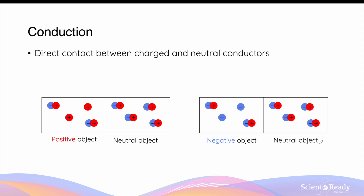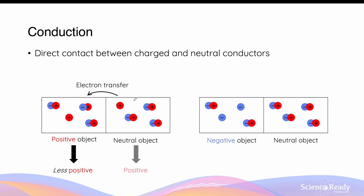The second way objects become charged is through conduction — when a charged object makes contact with a neutral object. When a positive object contacts a neutral object, the excess positive charge exerts an attractive force on the mobile electrons in the neutral object, causing electrons to transfer from the neutral object to the positive object. The positive object becomes less positive, while the neutral object, now with an excess of protons, also becomes positive.